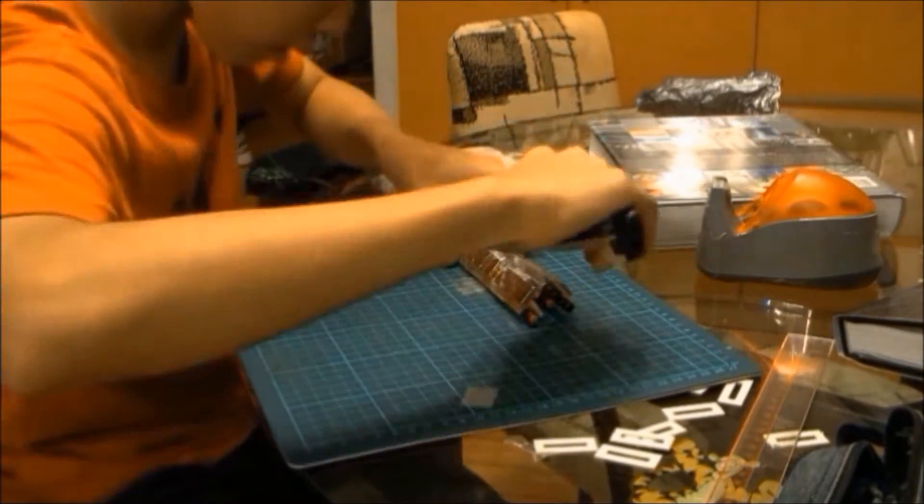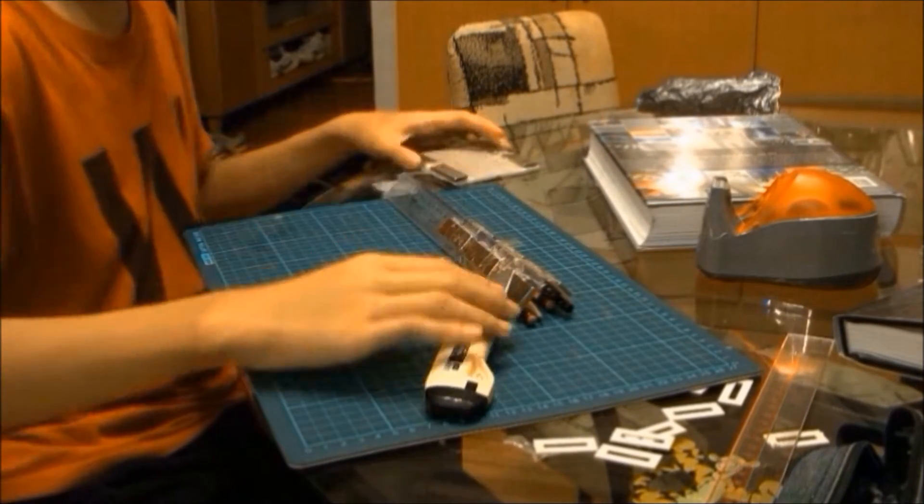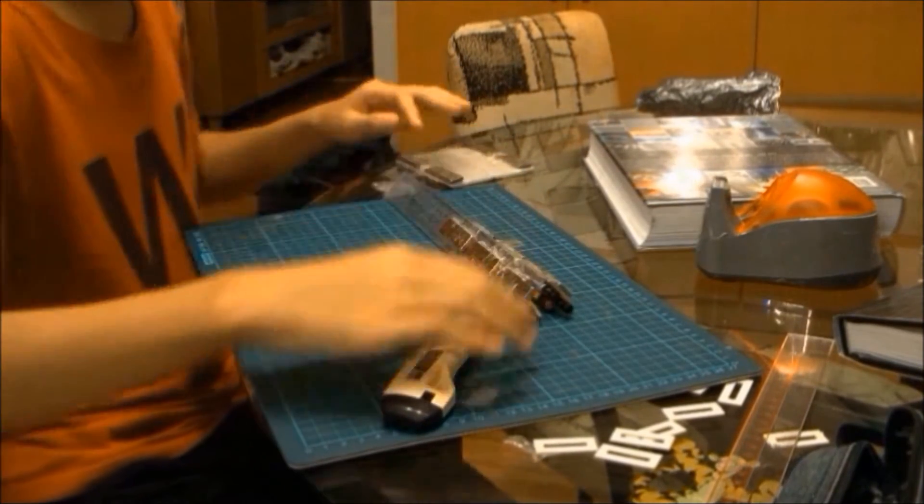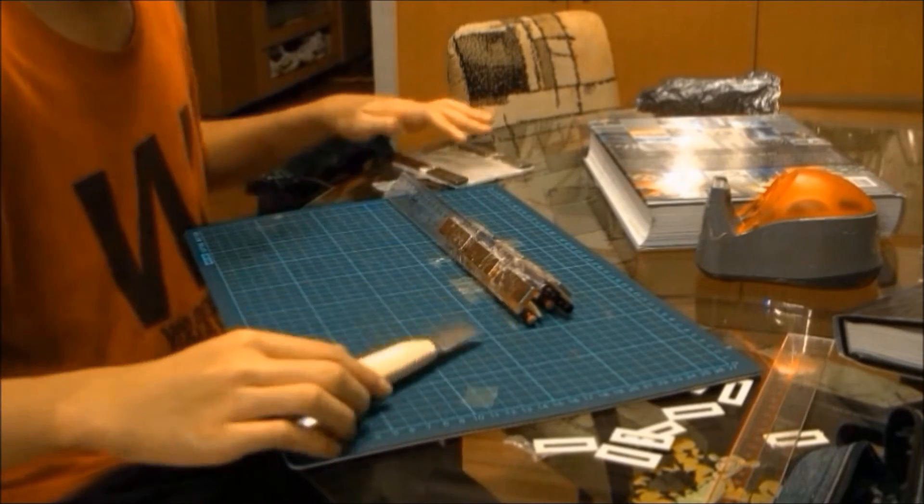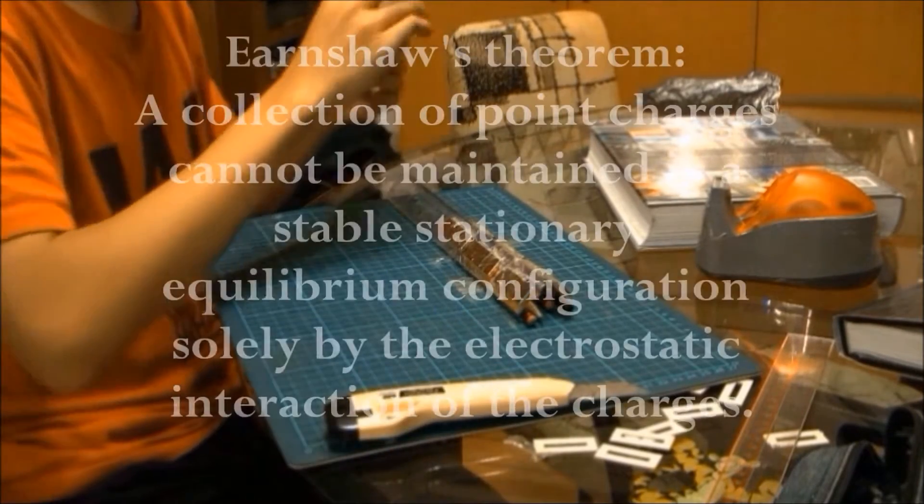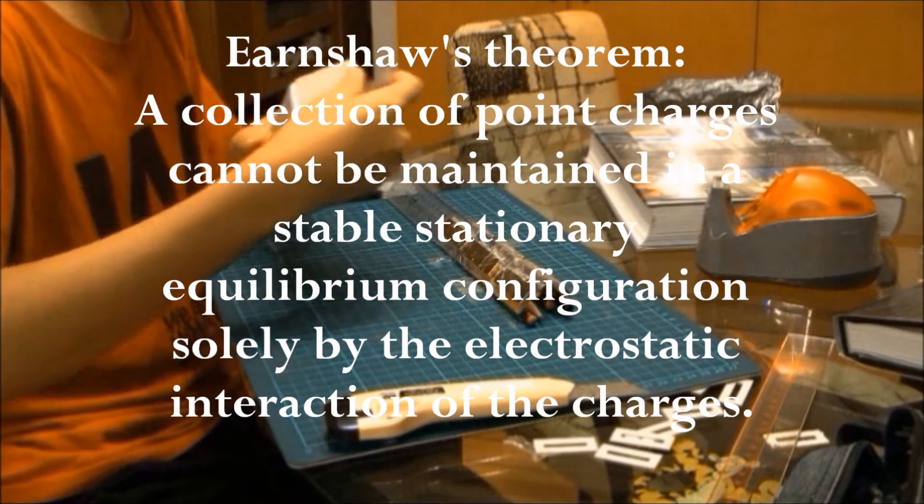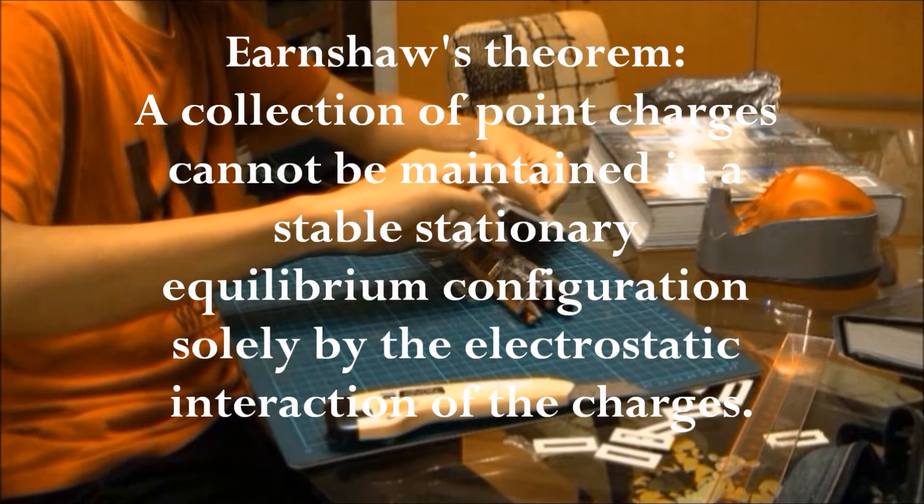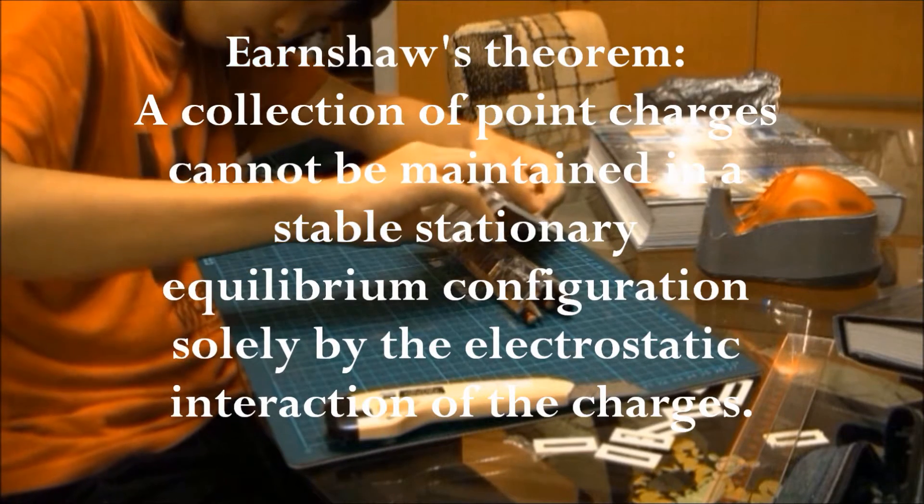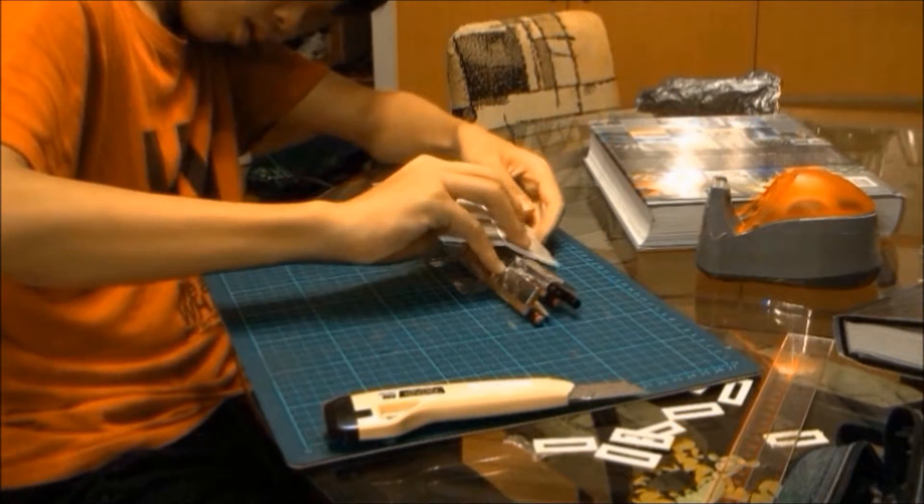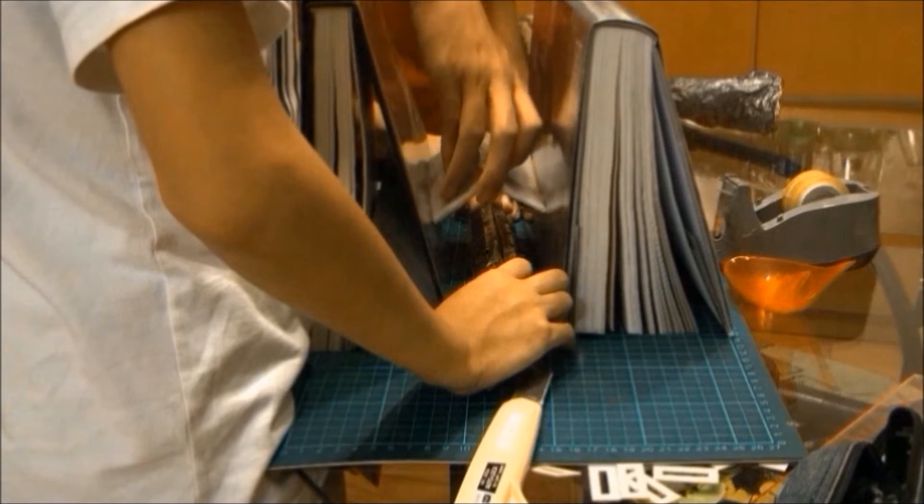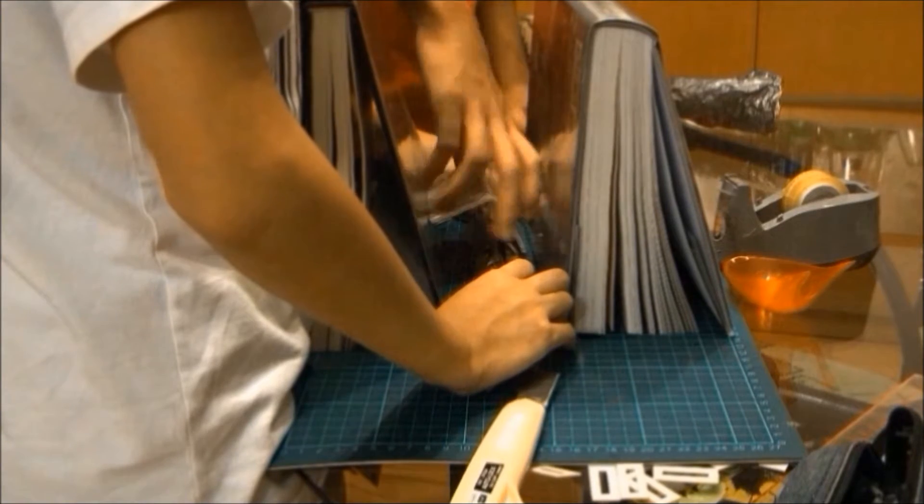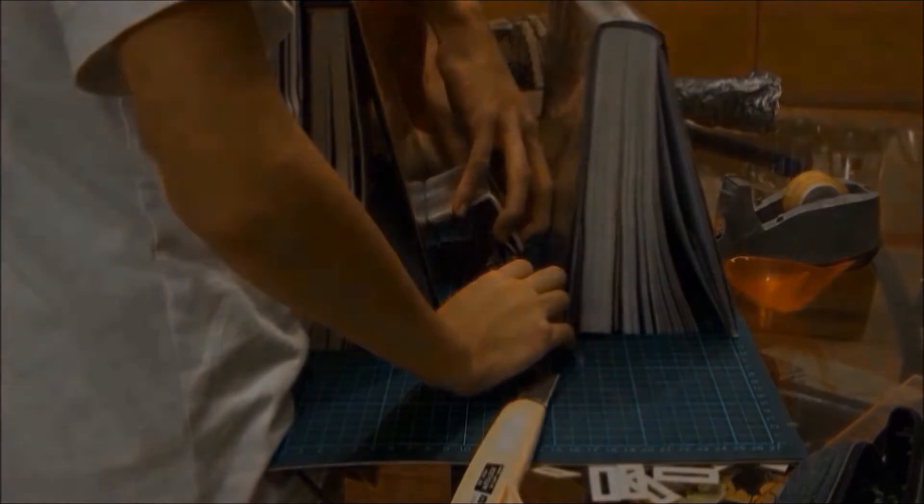It was then we acknowledged the existence of a scientific principle vital to the success of this project: Earnshaw's theorem. Earnshaw's theorem states that a collection of point charges cannot be maintained in a stable, stationary, equilibrium configuration solely by the electrostatic interaction of the charges. Essentially, we cannot stabilize a levitating magnet just using another permanent magnet. We then decided to do a little research and came up with something known as the Meissner effect.